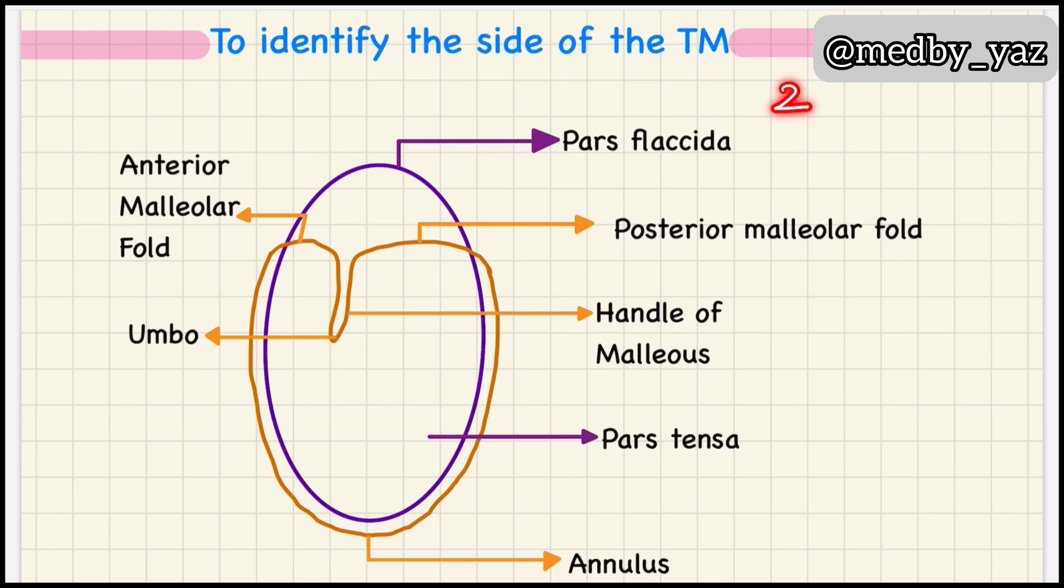TM is divided into two parts: this is the pars tensa and this is the pars flaccida. The pars tensa has four quadrants.